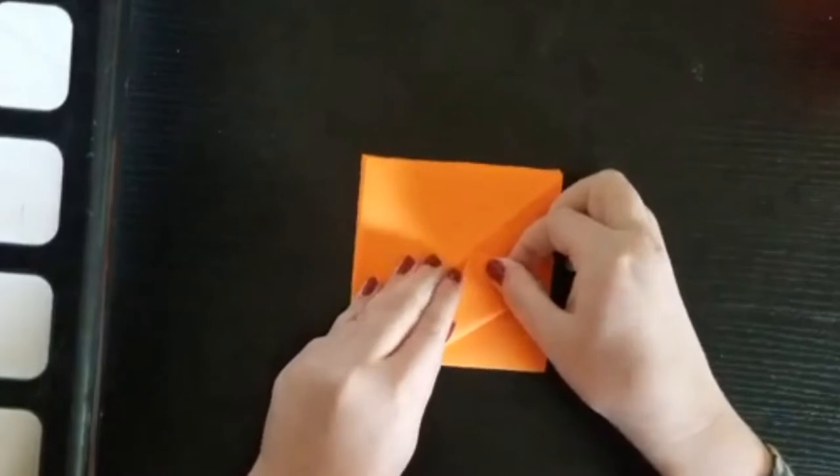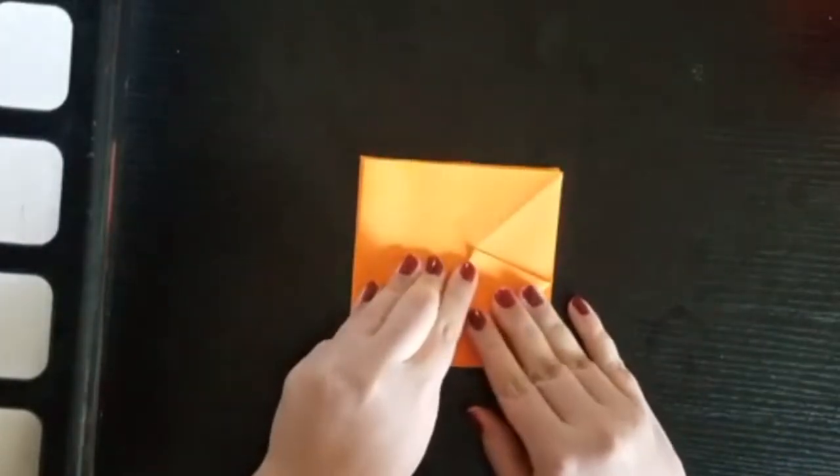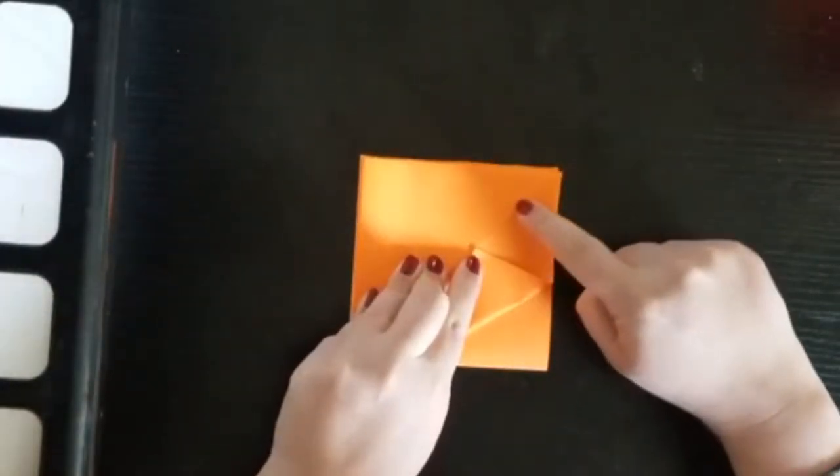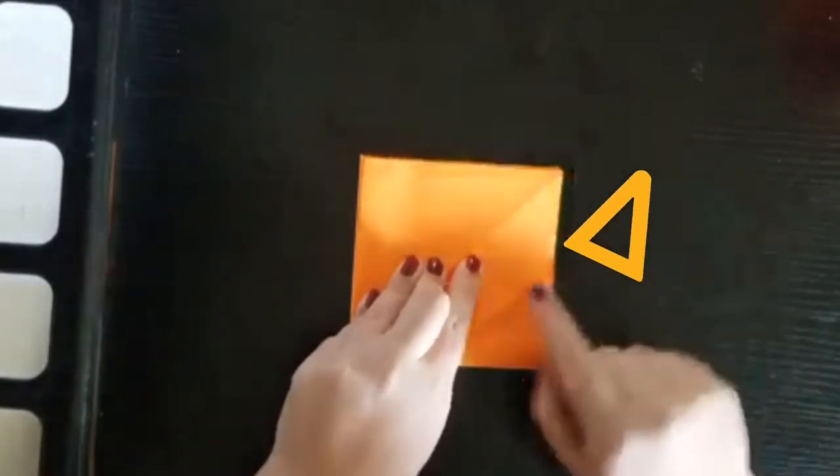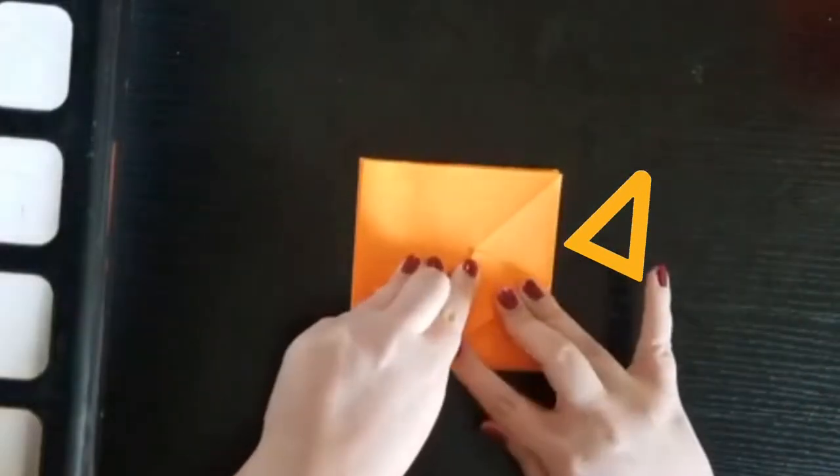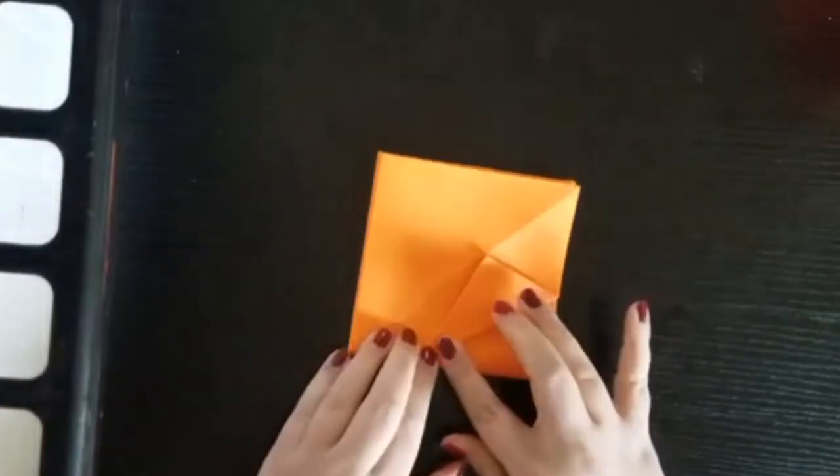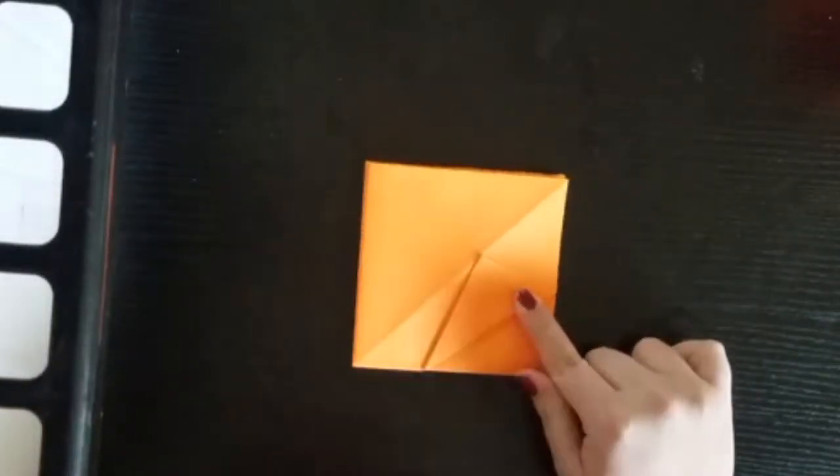Now pick up just one of the corner flaps and fold the corner towards the middle line. The space above that flap should be an isosceles triangle. That means the middle line above it and the outside should be equal in length.